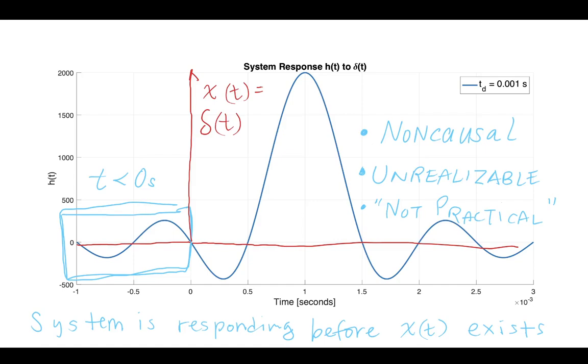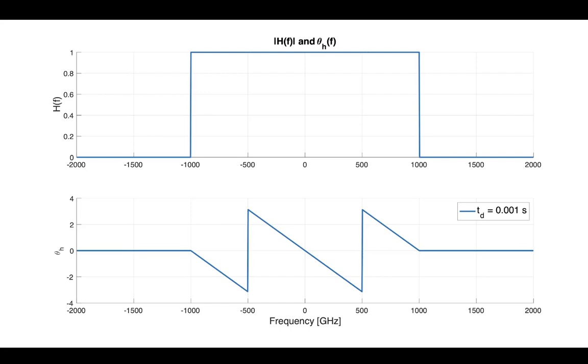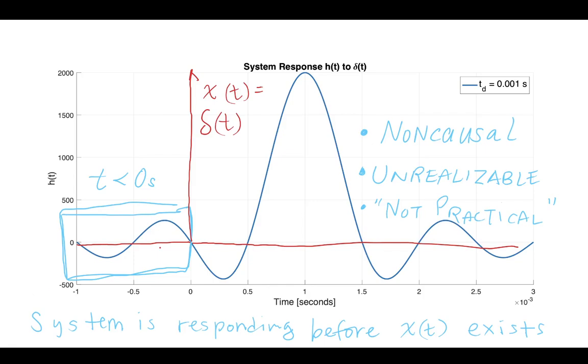So we call this non-causal. We call this transfer function, this time domain response, non-causal, unrealizable, or not practical. And this is why the pure ideal low-pass filter will not be able to be realized in a practical way. You have a part of the transfer function which actually has to respond to a system input before the system input exists.